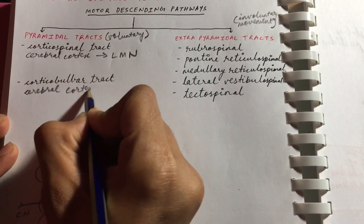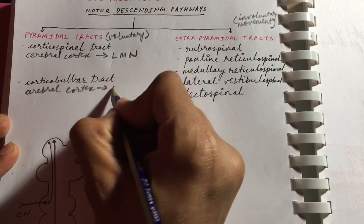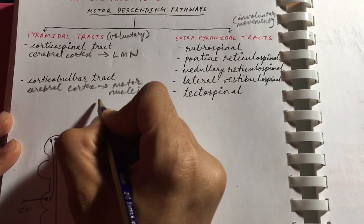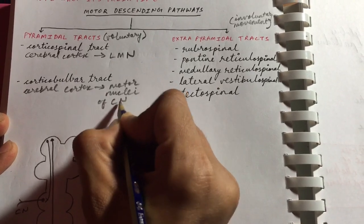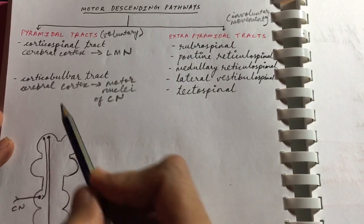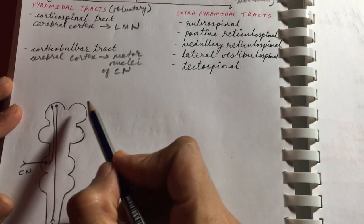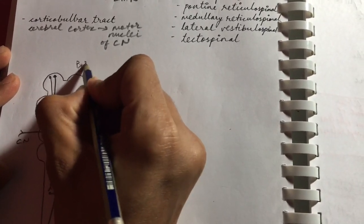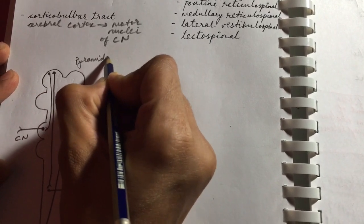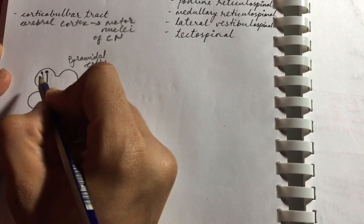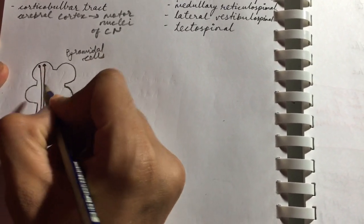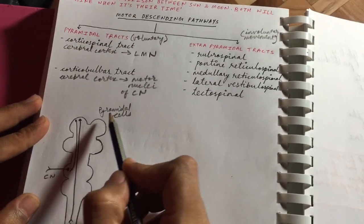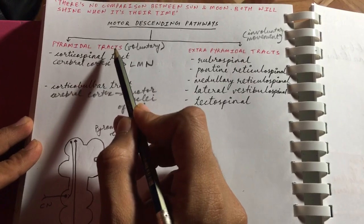Now, why is it named pyramidal tracts? A lot of people believe that the cerebral cortex has pyramidal cells, and since this tract starts in the pyramidal cells, they are named pyramidal tracts. But that's not exactly true.